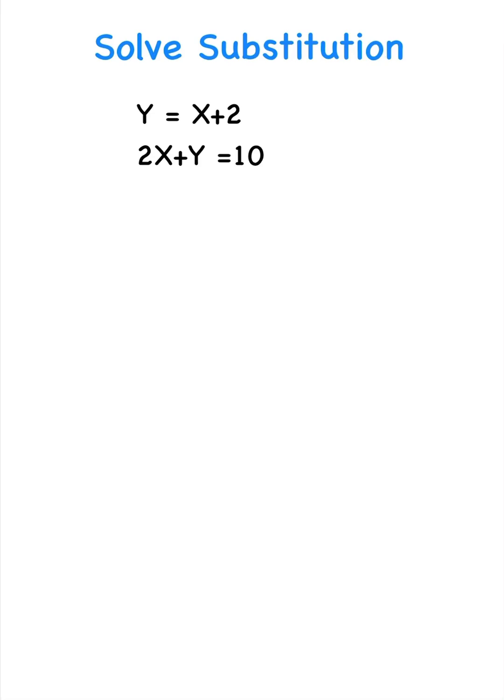How to solve a linear system using substitution. The first thing you need to do is define your first and second equation. Then the key part is to solve one equation for one variable.